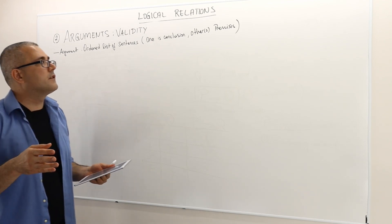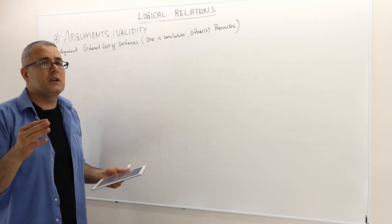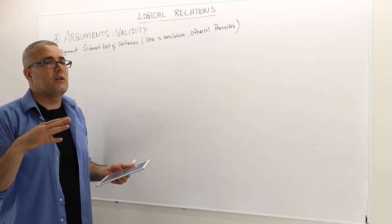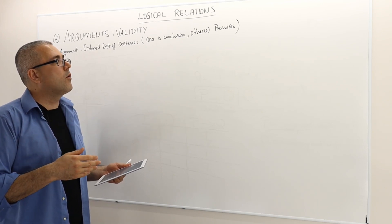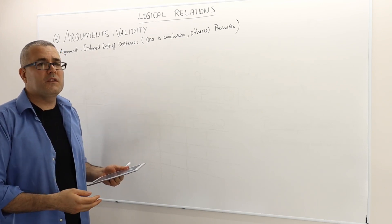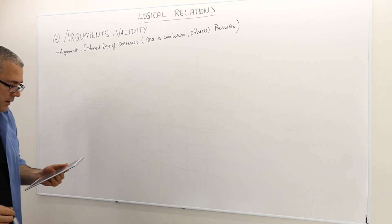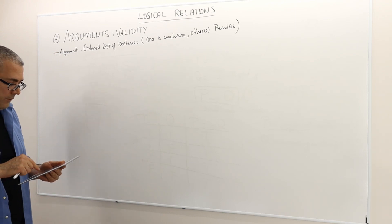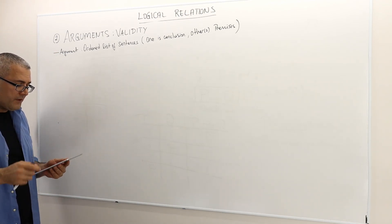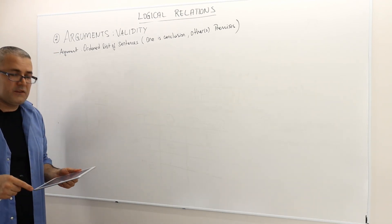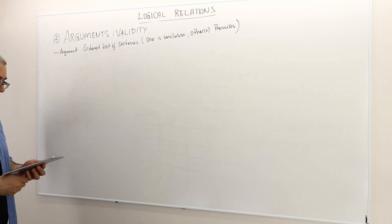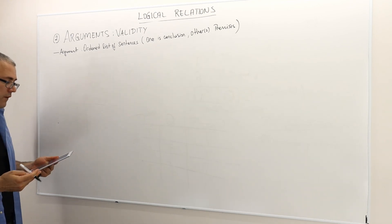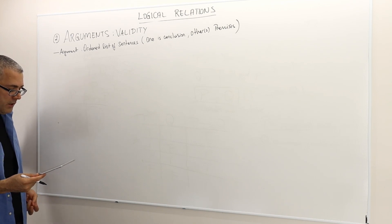One of those sentences is called the conclusion, and all the others, if there's more than one, are called premises. So what is a premise? A premise is a previous statement or proposition from which another is inferred or follows as a conclusion.